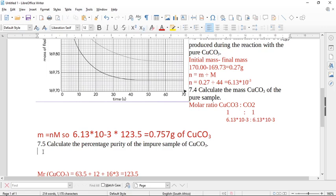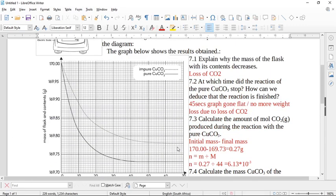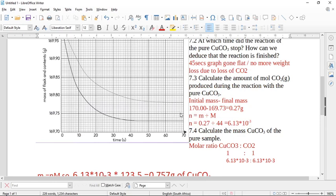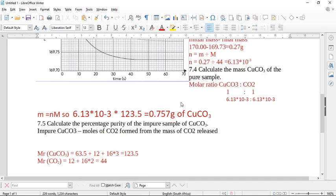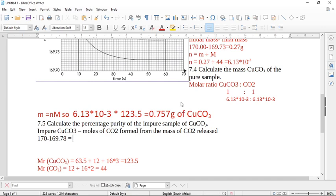So if we go for the impure copper carbonate, we first need to find the moles of carbon dioxide formed. And we get it from the mass of carbon dioxide released. So we started with 170 grams. And we were here 169.78. And this is going to give me the grams.